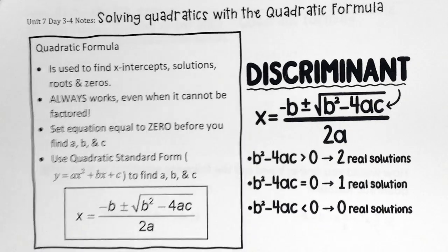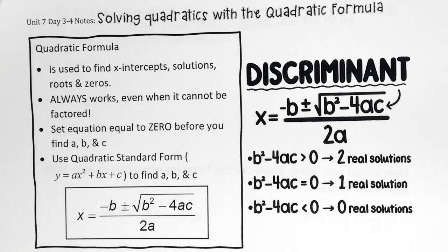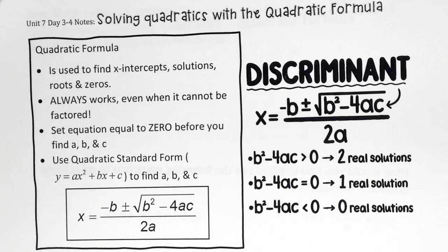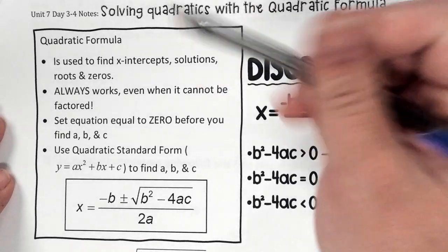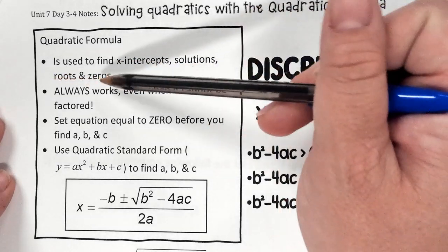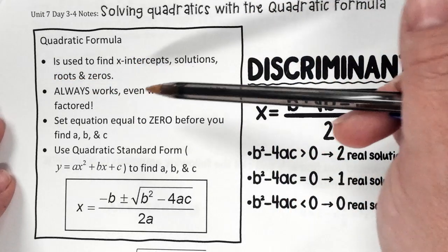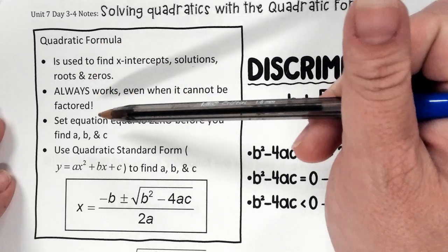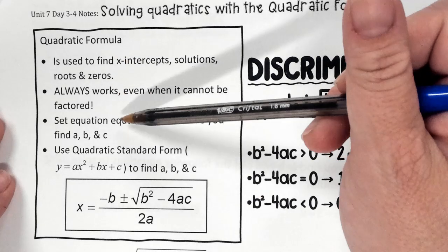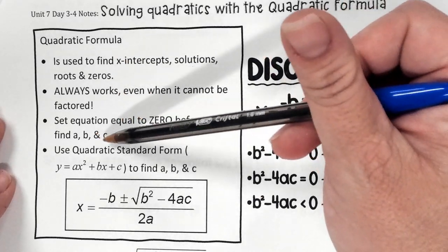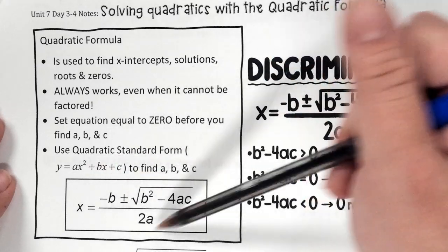We are doing quadratic formulas — this is our last method we're learning for solving quadratics. You've seen it in Algebra 1 and Algebra 2. It's used to find your x-intercepts, your solutions, your roots, your zeros, which is what we've been solving for with all these methods. It always works, even when it can't be factored — this is the only method that works every single time. Set the equation equal to zero before you find your a, b, and c, then use the quadratic formula to plug it in.